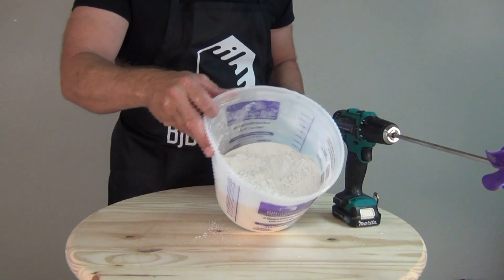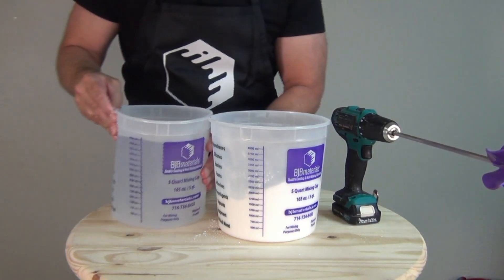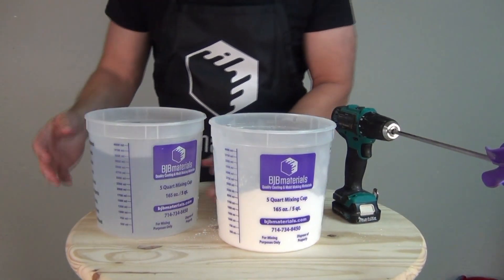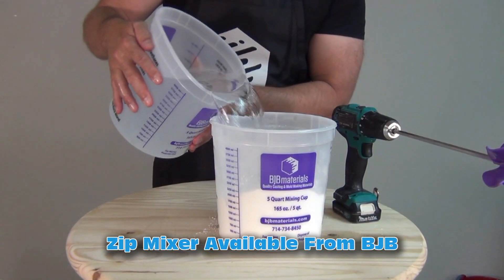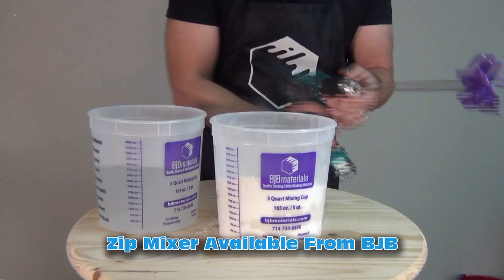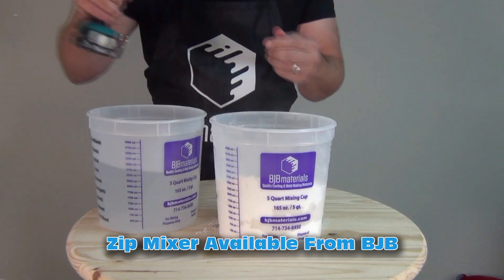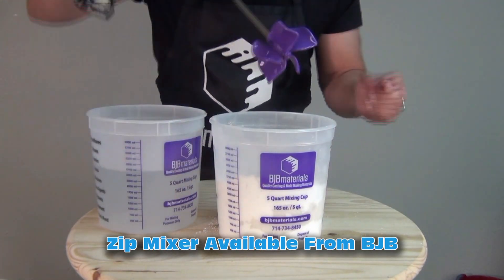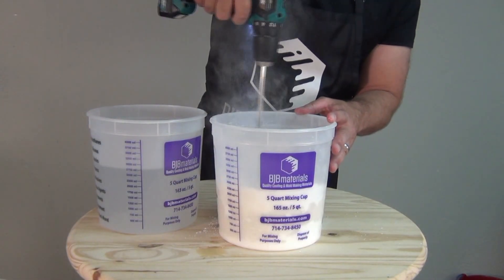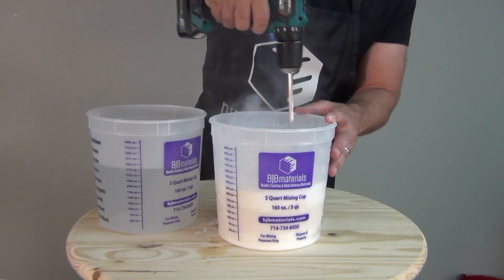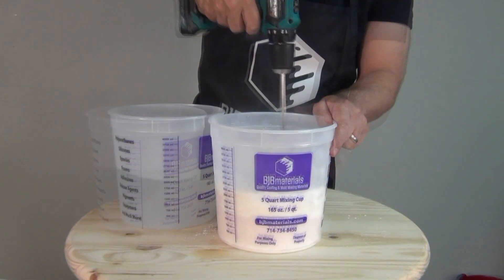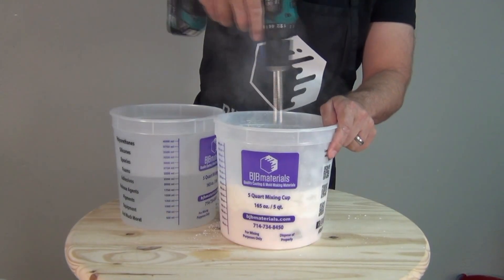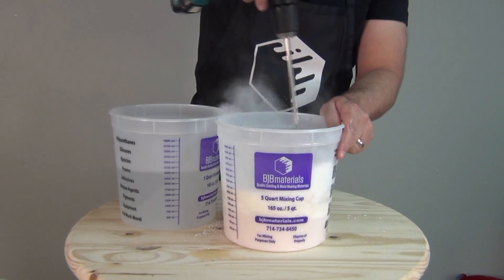Now, mixing and measuring of alginate is something I've covered in a lot of other tutorials, so for time's sake, I'm not going to cover it here. But an important detail about mixing is this zip mixer that Troy sent me. These zip mixers are fantastic for mixing silicones and polyurethane resins and foams and, of course, alginates as I'm doing right here. This works really well for getting into those corners around the bottom of the bucket.